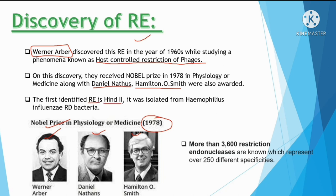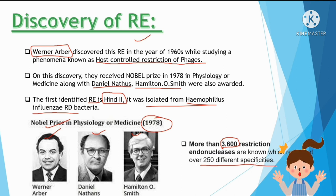The first restriction endonuclease to be characterized was HindII, and it was isolated from Haemophilus influenzae Rd bacteria. Every enzyme is isolated from different types of bacteria. There are around 3,000 or more restriction endonucleases isolated from different species of bacteria.